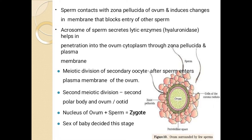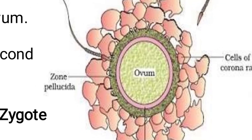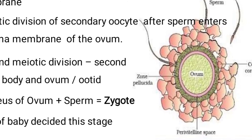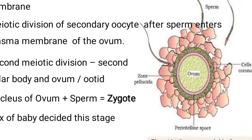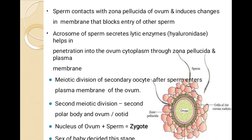Now let's look at the ovum structure. The ovum has three walls covering it: the perivitelline layer, the zona pellucida, and the corona radiata. These three layers cover the ovum. Now we will look at the sperm structure.